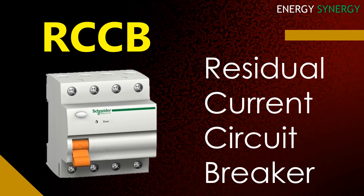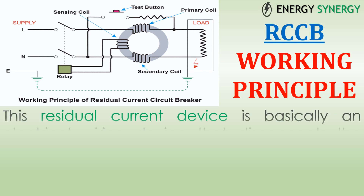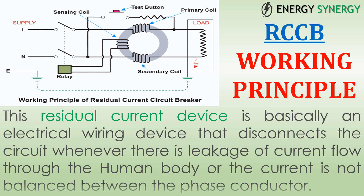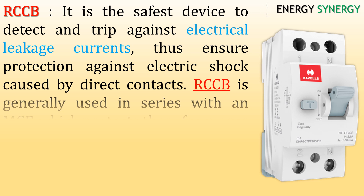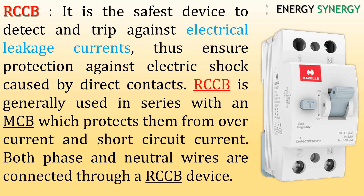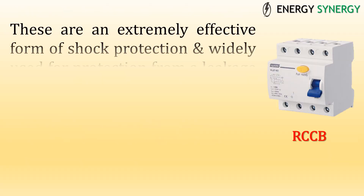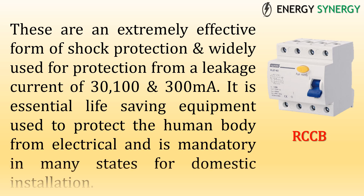RCCB stands for Residual Current Circuit Breaker. This residual current device is an electrical wiring device that disconnects the circuit whenever there is leakage of current flow through the human body, or when current is not balanced between the phase and neutral conductors. It is the safest device to detect and trip against electrical leakage currents, ensuring protection against electric shock caused by direct contacts. RCCB is generally used in series with an MCB. Both phase and neutral wires are connected through an RCCB device, and it is widely used for protection from leakage currents of 30, 100, or 300 milliamperes. It is essential life-saving equipment, mandatory in many states for domestic installation.